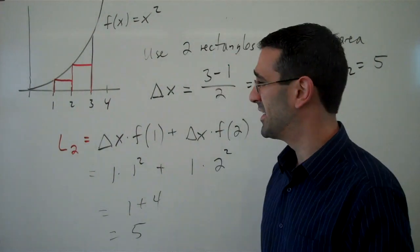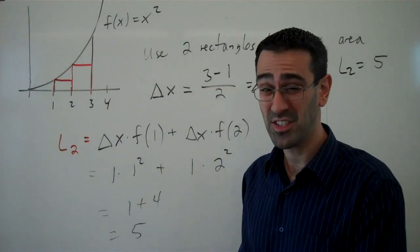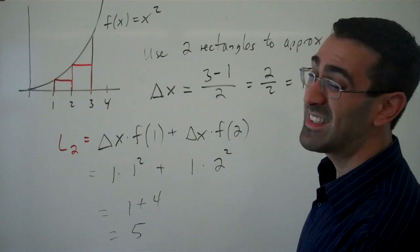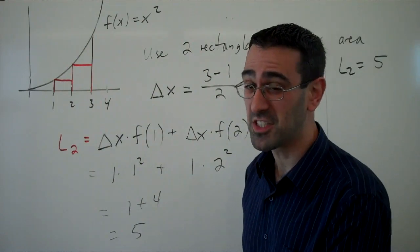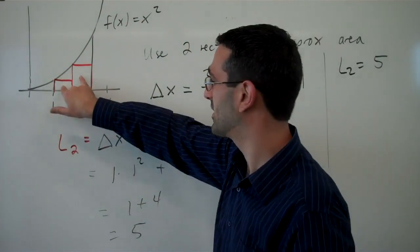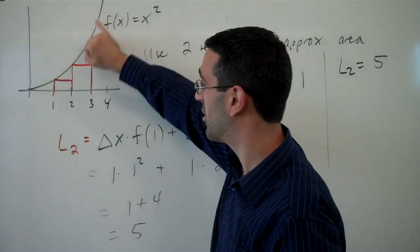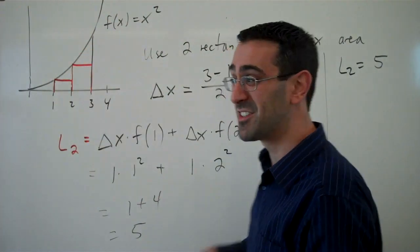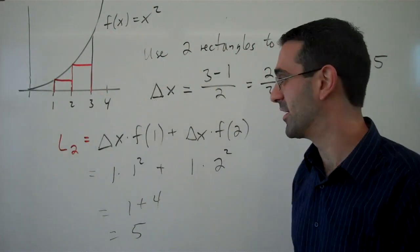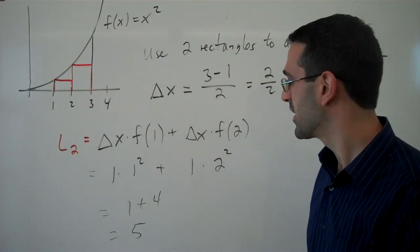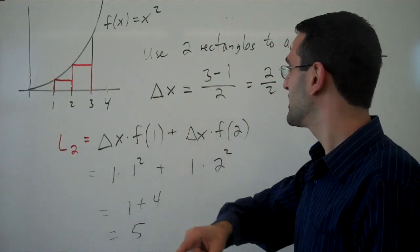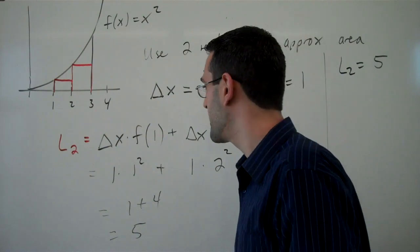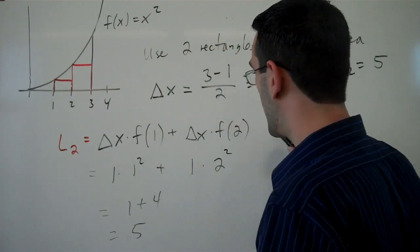Now, is that an underestimate or an overestimate? It's going to be an underestimate — these rectangles are smaller than the actual area, so this is smaller than the actual area under the curve. So that was the left endpoint approximation; that's one option.